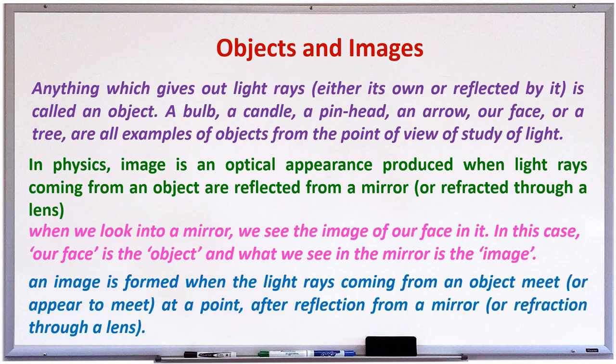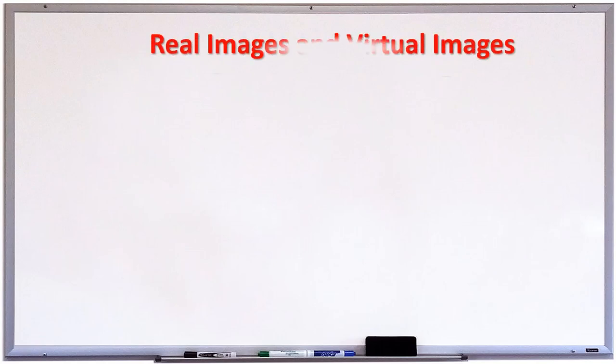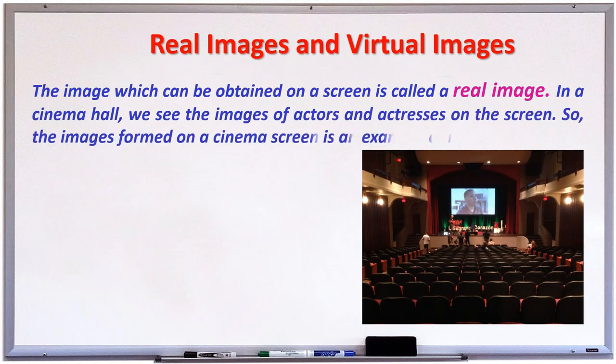An image is formed when light rays coming from an object meet or appear to meet at a point after reflection from a mirror or refraction through a lens. There are two types of images: real image and virtual image. The image which can be obtained on a screen is called a real image. In a cinema hall, we see the image of actors or actresses on the screen, so images formed on a cinema screen are examples of real images.